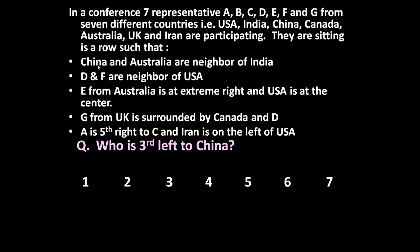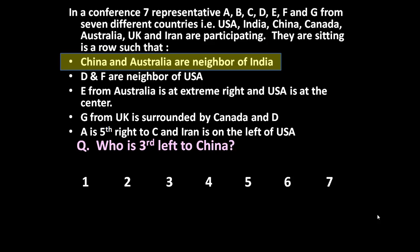First statement: China and Australia are neighbours of India. But where is India, where is China — nothing can be decided right now, so let us underline this and see it afterwards. Second: D and F are neighbours of USA. Again, where is D, where is F — nothing can be decided, so let us underline this too.